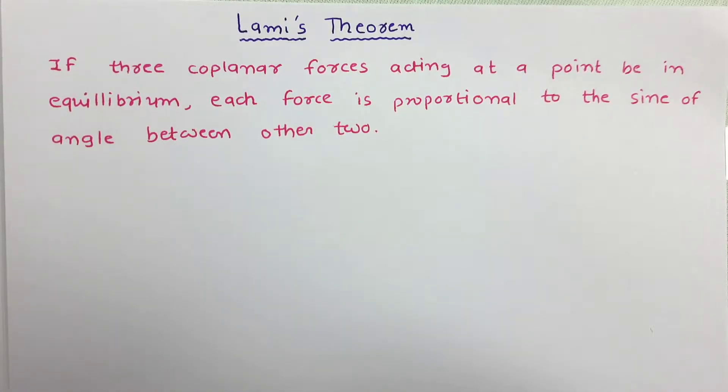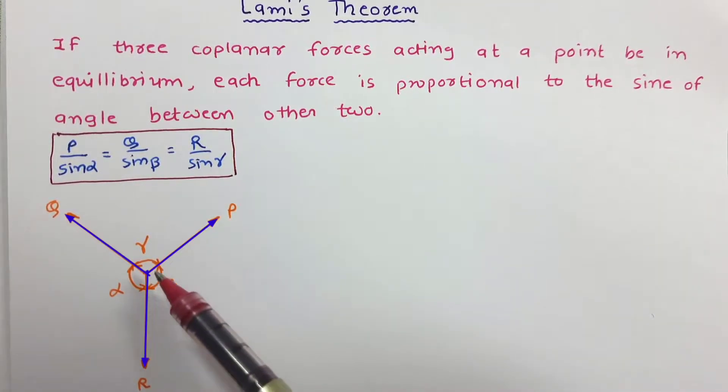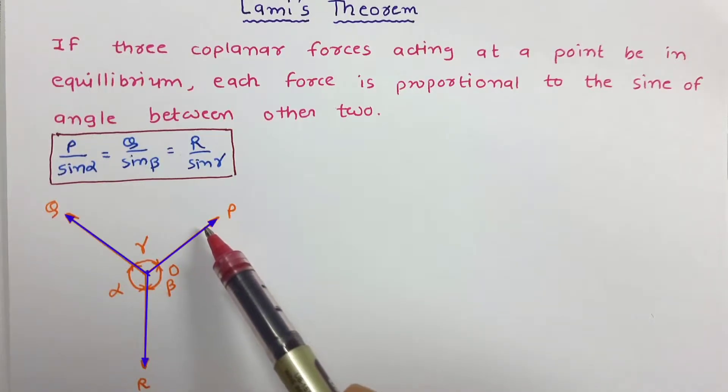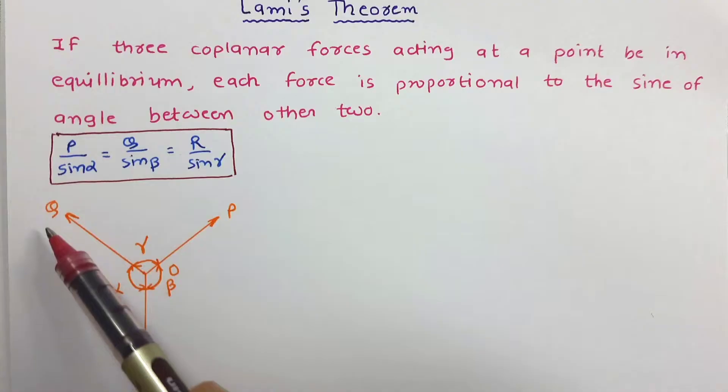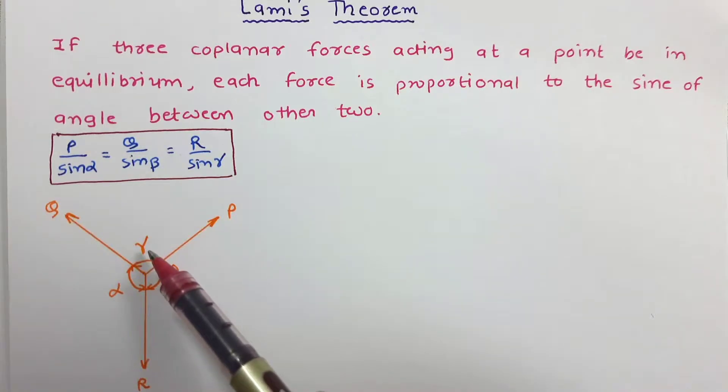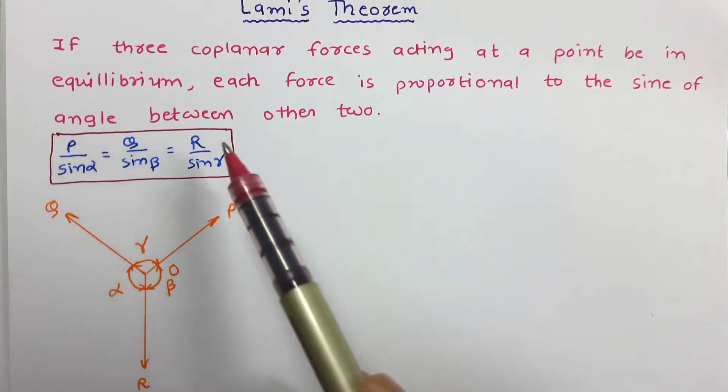Let us try to understand with the help of figure. So according to this theorem, if three coplanar forces acting at a single point be in equilibrium, let us say point O, and these all three forces are in equilibrium, then each force is proportional to sine of angle between other two. It means P is proportional to sine alpha, Q is proportional to sine beta, and R is proportional to sine gamma. So this is the equation for Lamy's Theorem.